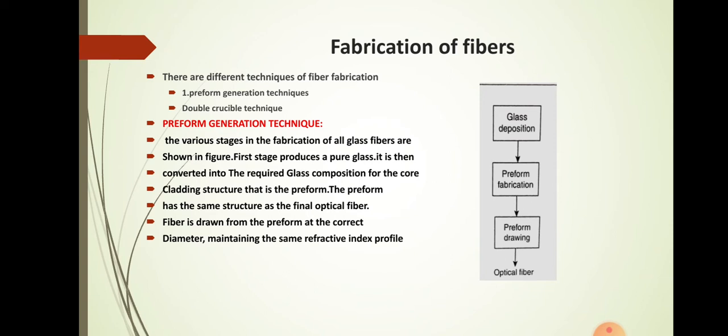The fabrication of fibers involves different techniques. The main steps are preform generation technique and double crucible technique. The major blocks in fiber fabrication are: first, glass deposition; second, preform fabrication; and third, preform drawing, from which we obtain the optical fiber. The preform has the same structure as the final fiber, and fiber is drawn from the preform at the correct diameter maintaining the same refractive index profile.